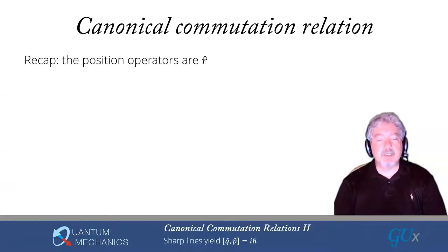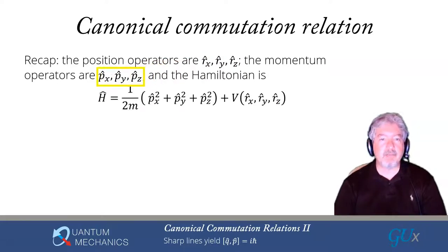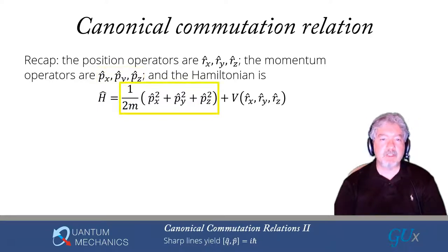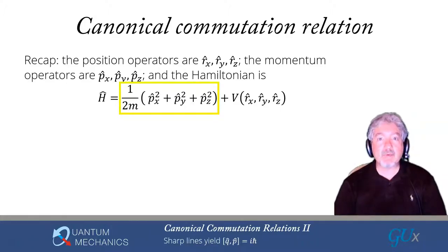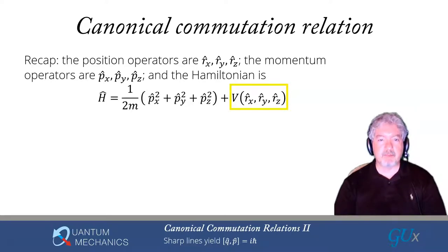Let's recap what we learned in the first part of this lecture. We have three position operators, Rx hat, Ry hat, Rz hat, and three momentum operators, Px hat, Py hat, Pz hat. The Hamiltonian is the sum of the kinetic energy and the potential energy — kinetic energy being 1 over 2m times P hat x squared plus P hat y squared plus P hat z squared — and then the potential being V of Rx, Ry, Rz.